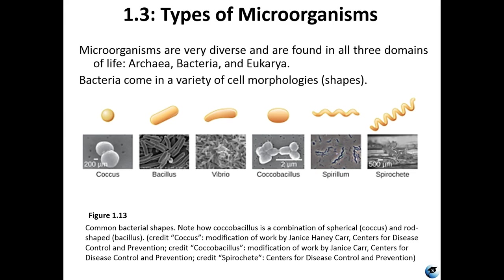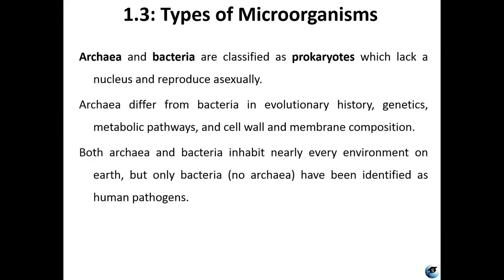Figure 1.13 gives examples of colony morphologies and different shapes of single bacterial cells: cocci, bacilli, vibrio, coccobacillus, spirillum, and the true corkscrew shape called a spirochete. Archaea and bacteria are both classified as prokaryotes — they don't have a nucleus and reproduce asexually. 'Pro' means 'before' and 'karyon' means 'nucleus' in Latin. Archaea differ from bacteria in evolutionary history, genetics, metabolic pathways, cell wall, and membrane composition. Both inhabit nearly every environment on Earth, but only bacteria have ever been identified as human pathogens, not Archaea.